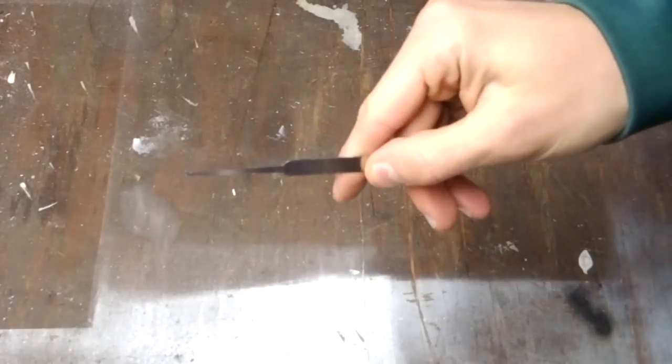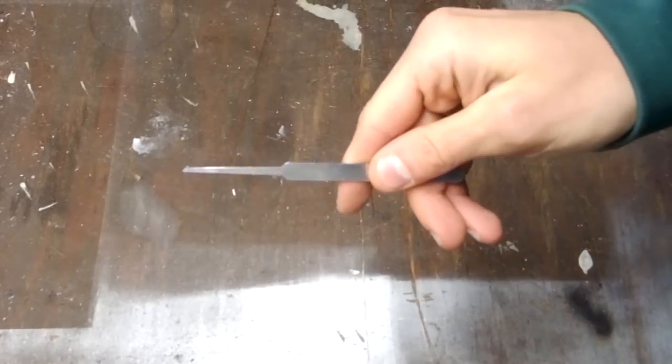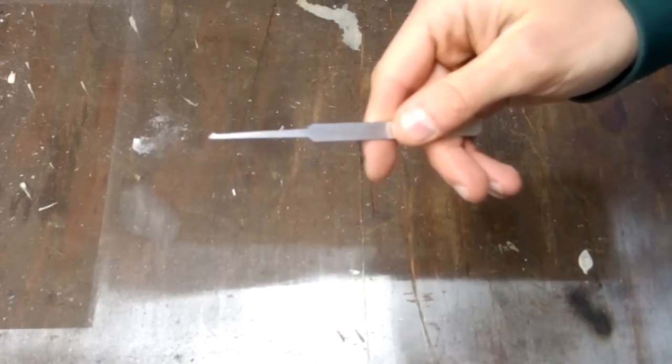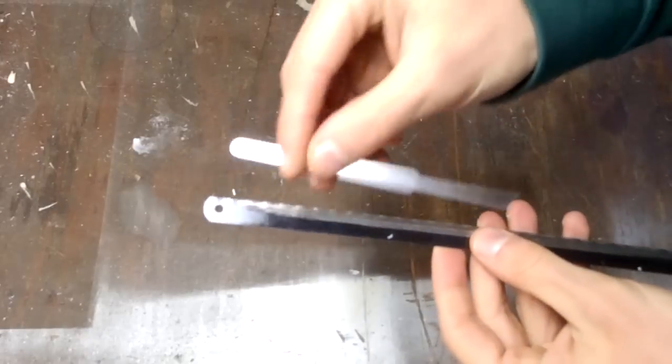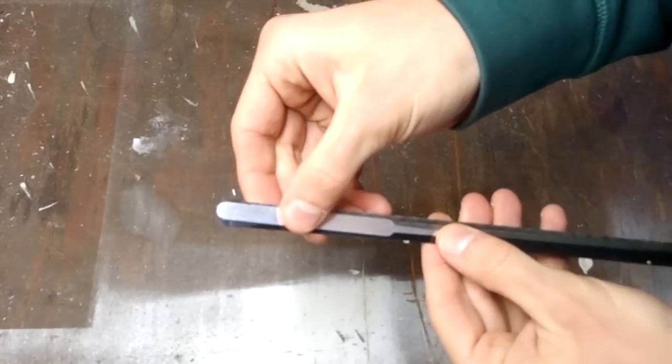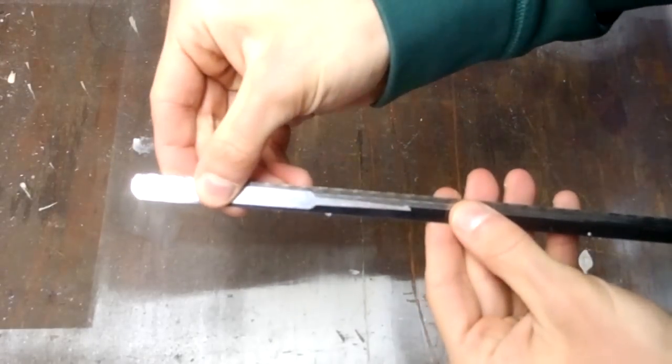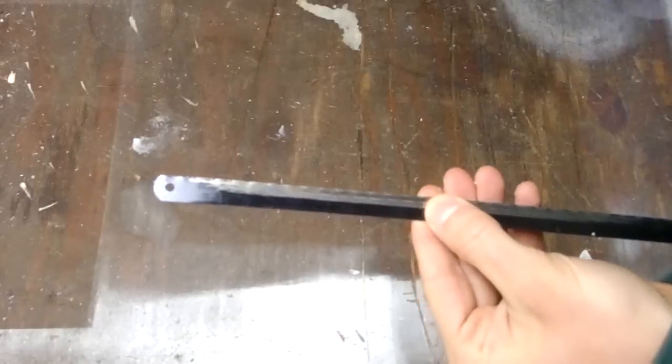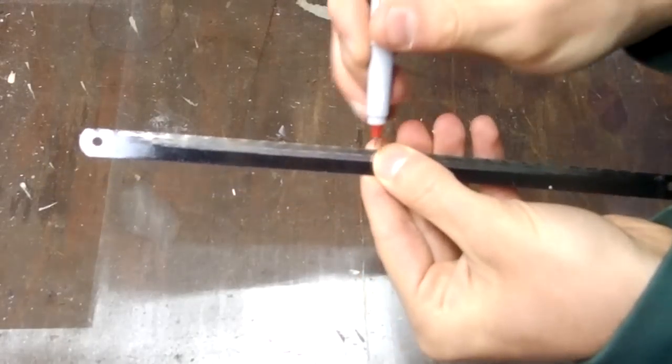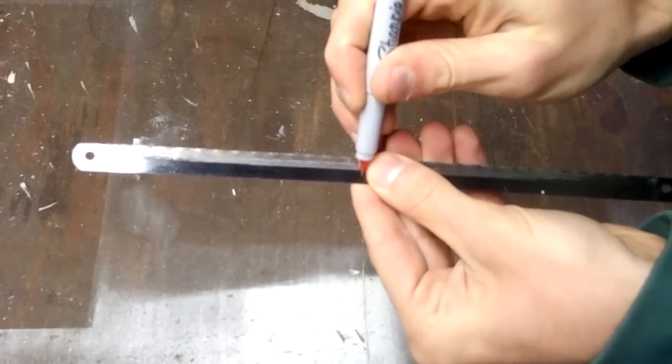I bought this half diamond pick a while back. I'm going to use it as a template. I'm going to lay it over the hacksaw blade. Then I want to keep track of how long it needs to be, so I'll use a sharpie to place a mark.